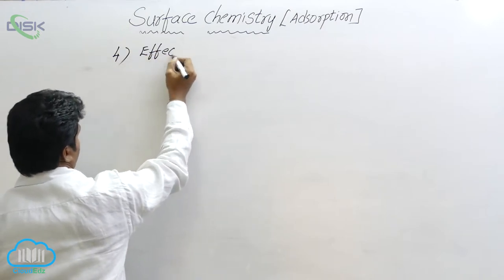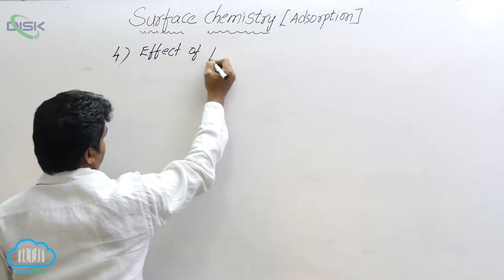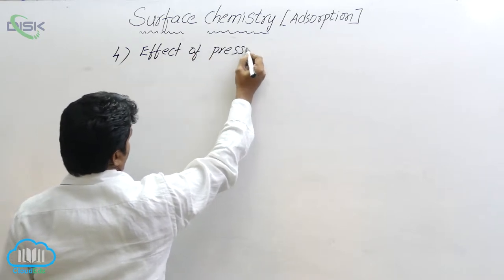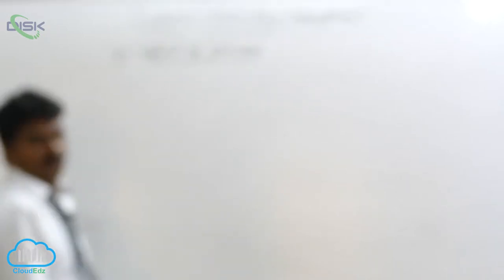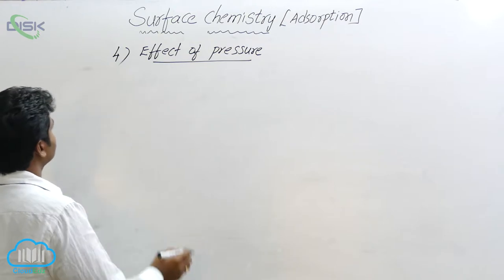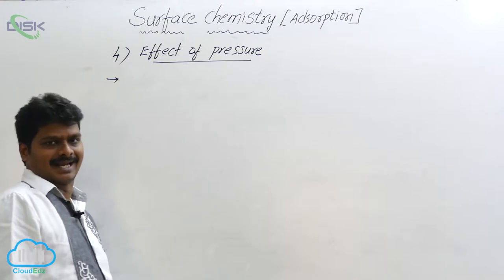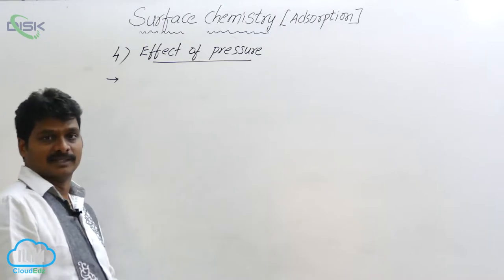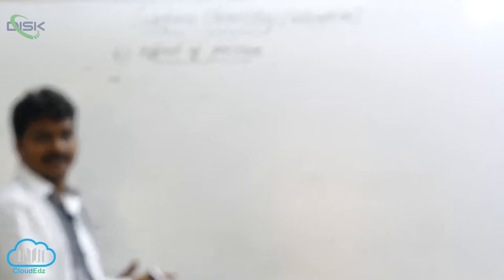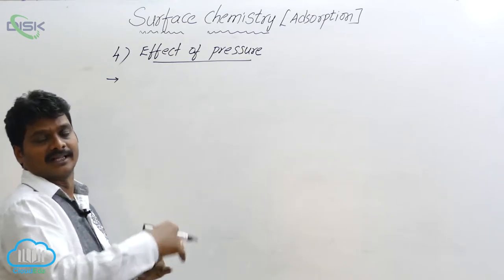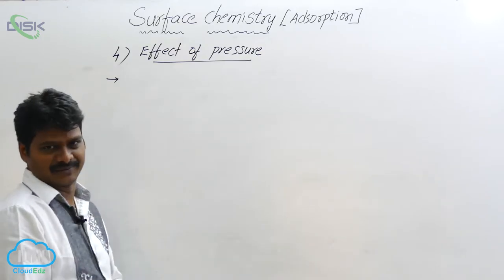The fourth factor is the effect of pressure on the adsorption of a gas on a solid surface. In the case of physical adsorption, multilayer formation takes place with increase in pressure. Whereas in chemical adsorption, only a single layer is formed.